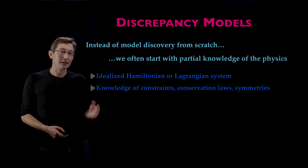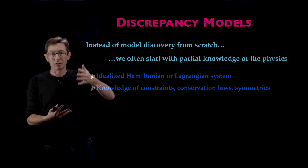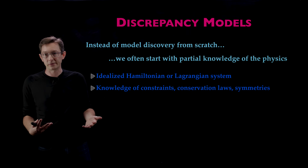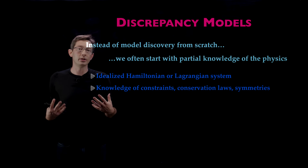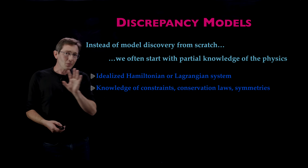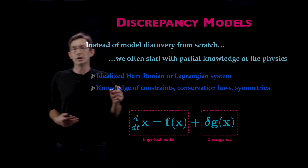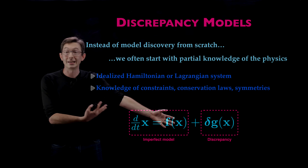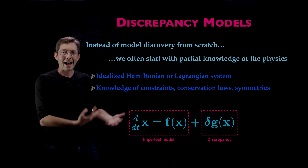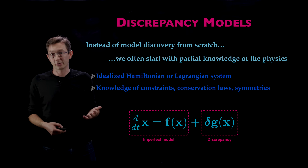Instead of discovering a model from scratch with no prior knowledge, it's much more realistic to start with some partial knowledge of the physics—maybe an idealized Hamiltonian or Lagrangian for a double pendulum or autonomous vehicle, or constraints, symmetries, and conservation laws. You don't know the exact dynamics, but you have this partial physical knowledge. So rather than discovering the model from scratch, you start with an imperfect model and focus your machine learning efforts on modeling the discrepancy—the part that doesn't fit your data.